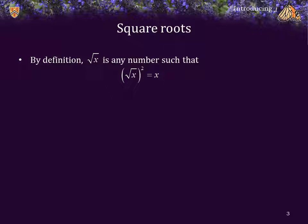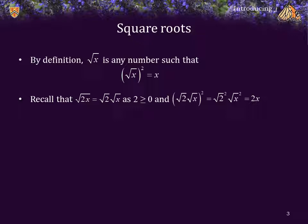By definition, the square root of x is a number such that that number squared is equal to x. The square root of 2x is equal to the square root of 2 times the square root of x, because 2 is greater than or equal to 0. If we square the square root of 2 times the square root of x, we get the square root of 2 squared times the square root of x squared. The first is 2, the second is x, so that is equal to 2x.